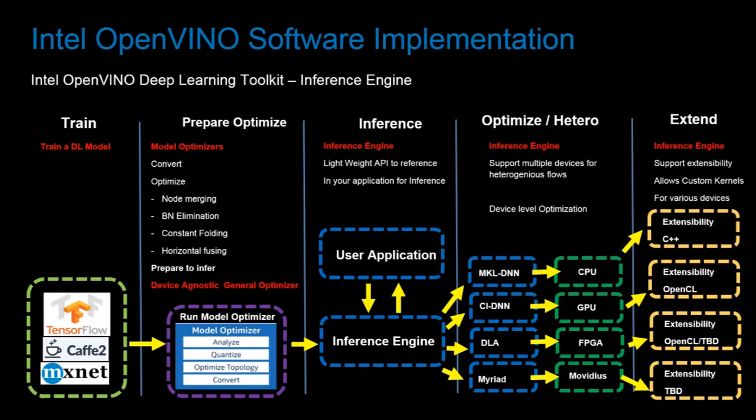The IR consists of two main files: a .xml file that describes the network topology, such as node merging, batch normalization elimination, and horizontal fusion; and a second file, a .bin file that contains the weights and biases binary data. The inference engine provides a simple and unified API for inference across all Intel architecture, and also provides a future-proof scaling path for development of future Intel assets targeted at tackling AI workloads.